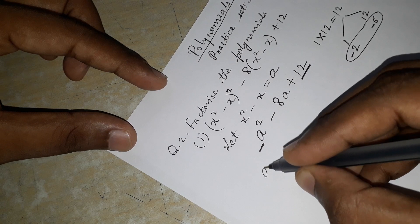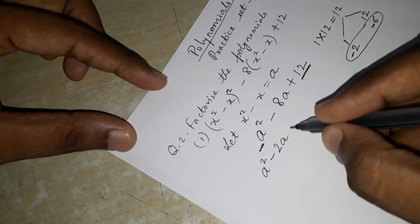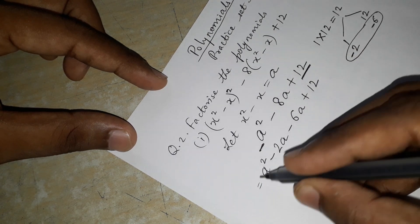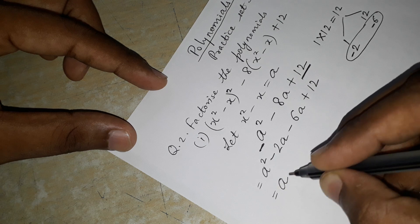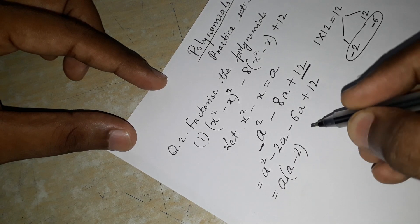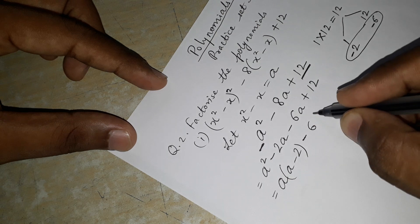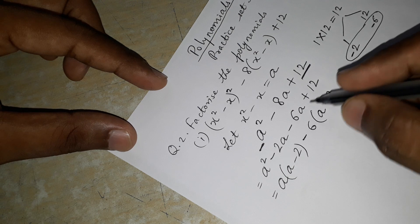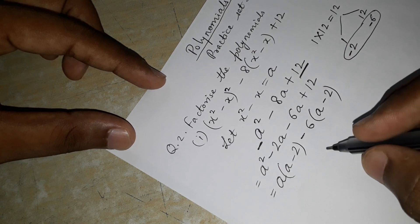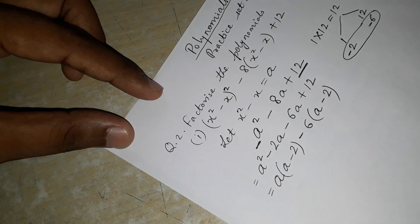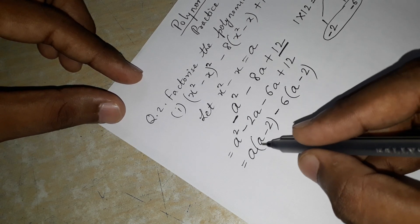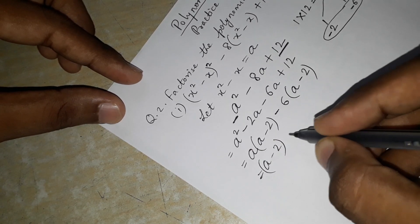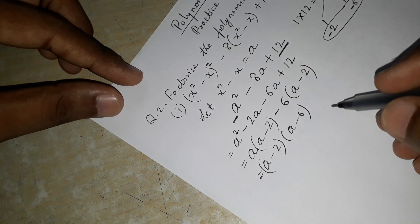So we can write a² - 2a - 6a + 12. Now we take a as common from the first two terms, leaving (a - 2), and take minus 6 as common from the last two terms, also leaving (a - 2). So we get (a - 2)(a - 6).